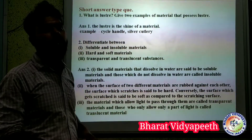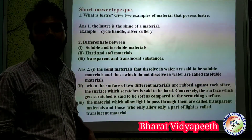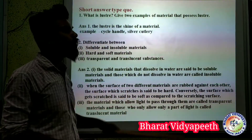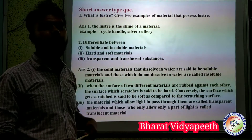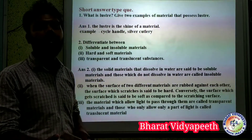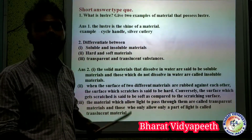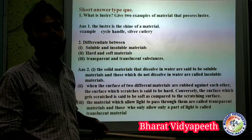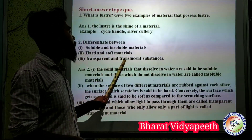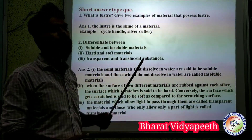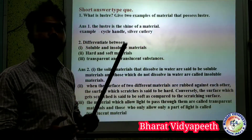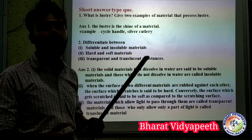Transparent materials allow light to pass through completely. Translucent materials allow only part of the light to pass through the material.